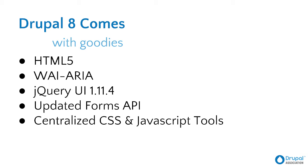One of the things that made Drupal 7 so good was the Forms API. So many elements for creating and developing a web form in Drupal are done through a centralized application programming interface that allows us to have a lot of control about how forms are processed. We've updated that to give a lot more context and information, which really helps with accessibility. There are also a number of centralized CSS and JavaScript tools that make it easier to convey information to screen readers and control how keyboard-only users navigate your site.